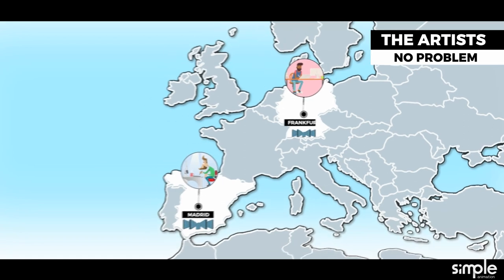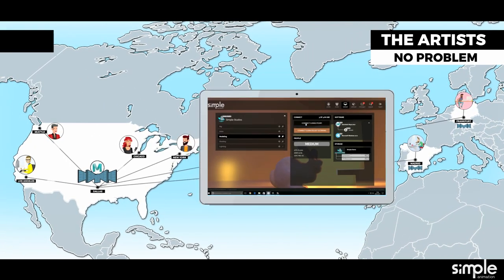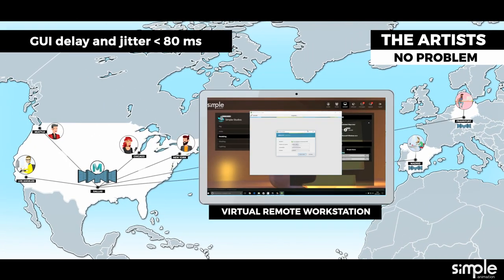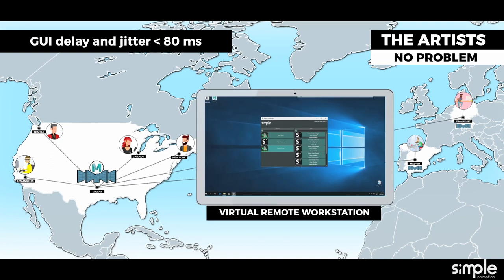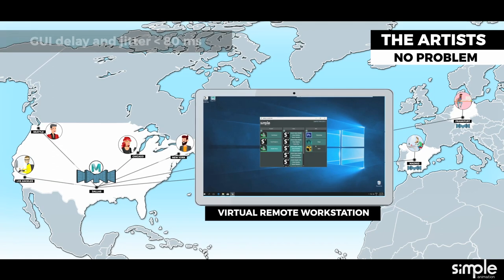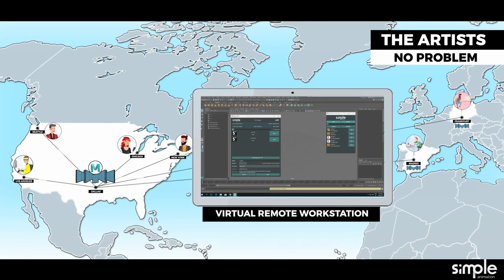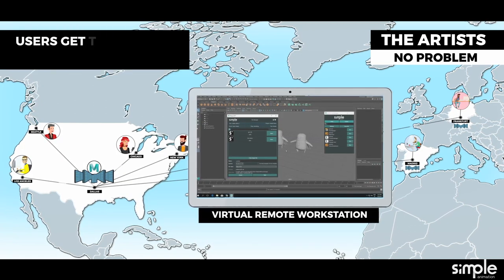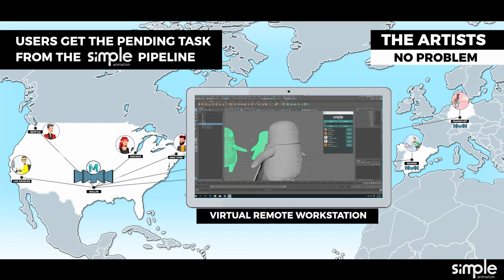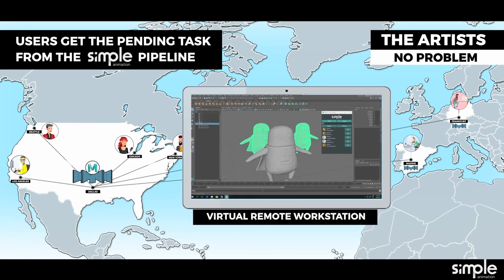Each user connects their virtual workstation desktop to Simple's closest data center, reducing the graphical user interface delay and jitter below 80 milliseconds. All workstation configurations are identical to the pool located in the main data center. New users abroad work just like the other users in John's studio and get their pending tasks from the Shotgun-based interface.